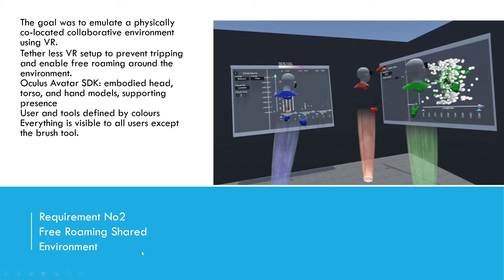The second requirement was a free-roaming shared environment. The goal was to emulate a physically co-located collaborative environment using VR, with a tetherless experience to prevent tripping and enable free roaming. The Oculus Avatar SDK was used to embody each user with a head, body, torso, and hand model, giving a sense of presence among all three participants and making collaboration much easier. Each user was assigned a distinct color — red, yellow, and green — with their tools and diagrams displayed in matching colors, allowing participants to distinguish their own work from others.